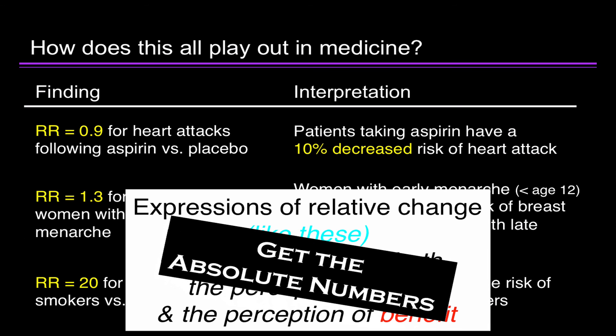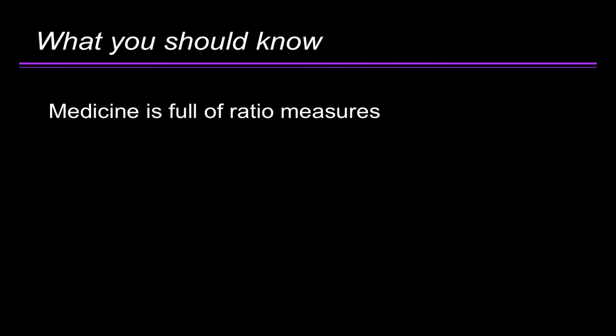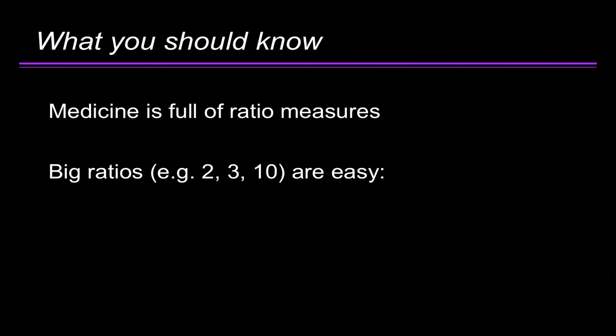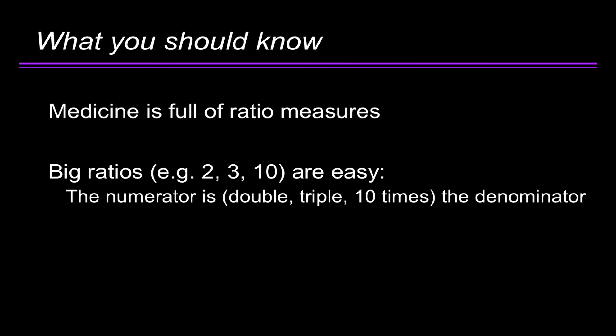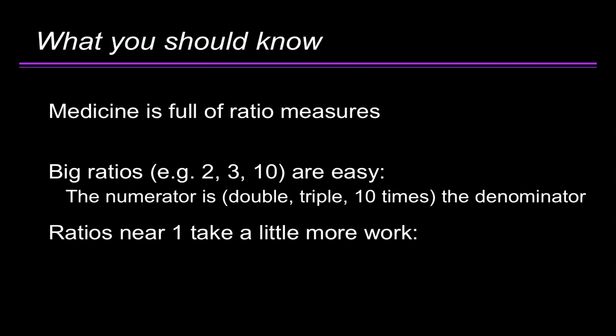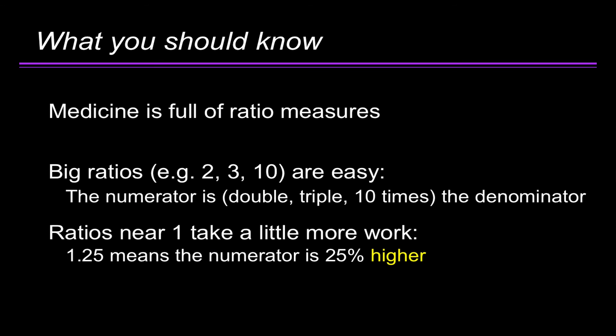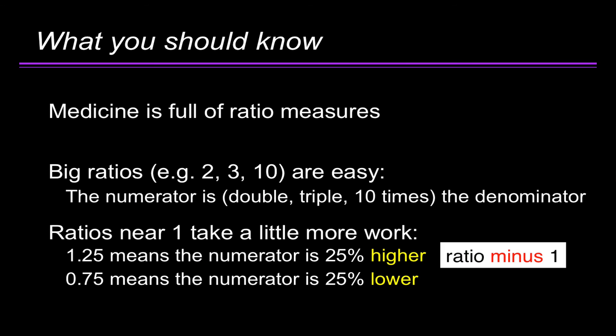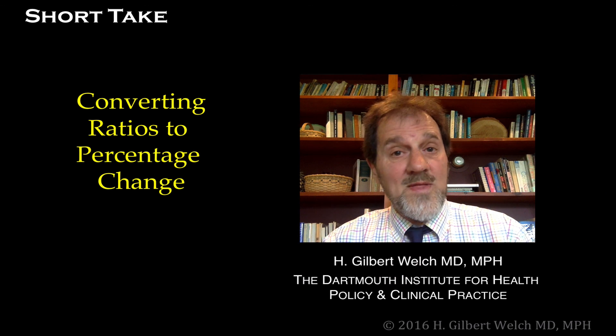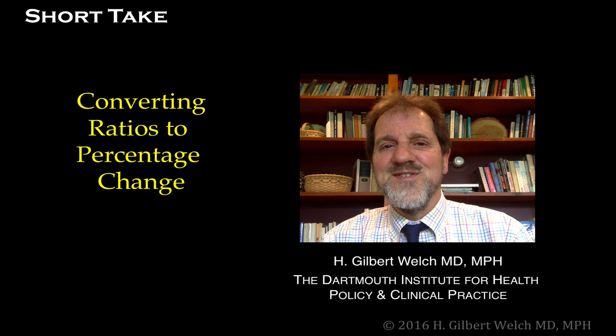What you really want is the absolute numbers. Here's what you should know: medicine is full of ratio measures. Big ratios — 2, 3, 10 — are easy; the numerator must be double, triple, or 10 times the denominator. Ratios near 1 take a little more work: 1.25 means the numerator is 25% higher (ratio minus 1), while a ratio of 0.75 means the numerator is 25% lower (1 minus the ratio). That's it — I hope this helps.